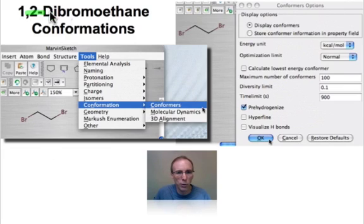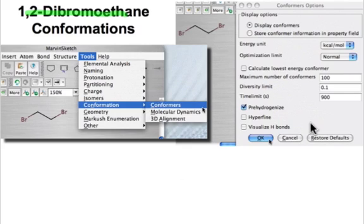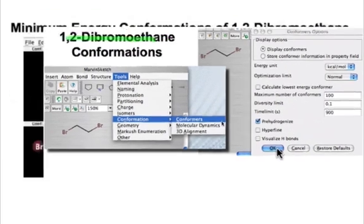Take the molecule 1,2-dibromoethane, draw it in MarvinSketch, then under Tools, Conformation, Conformers, we can use the parameters that are in the table shown here to determine the different conformations of this molecule.